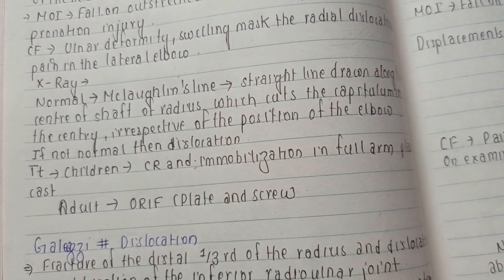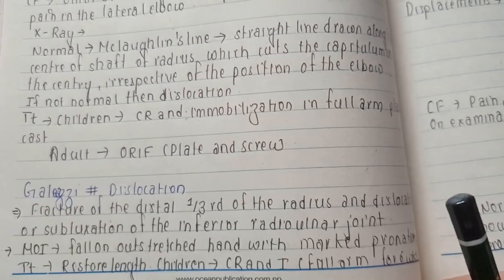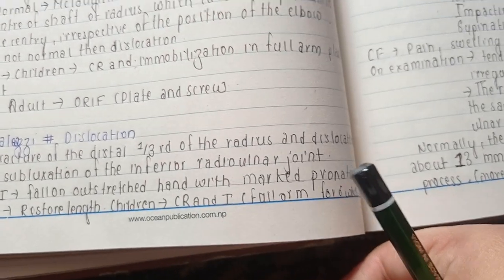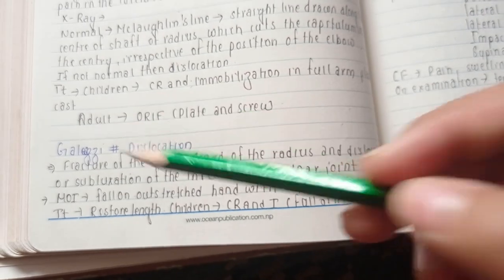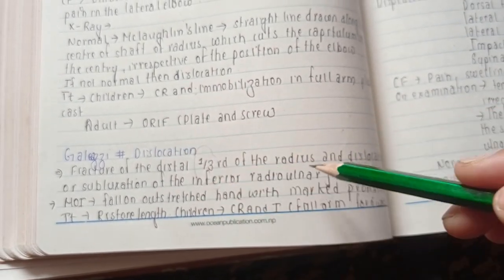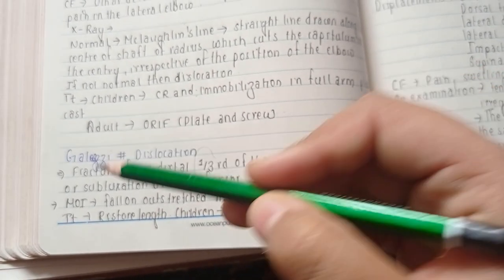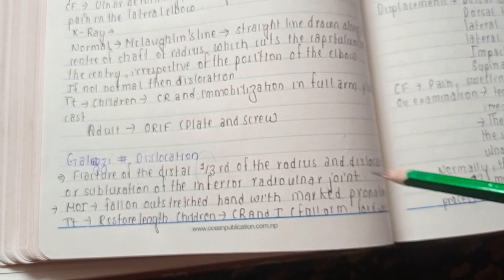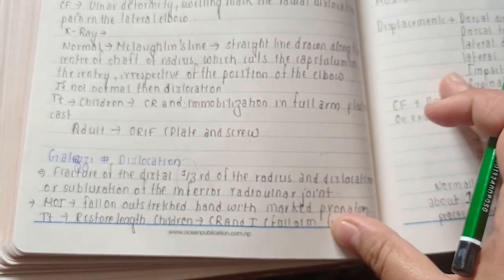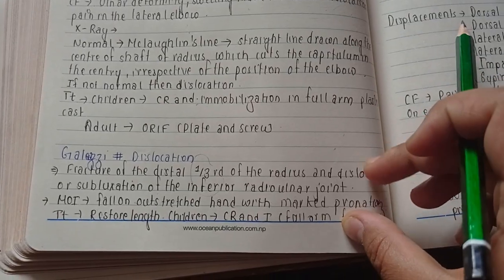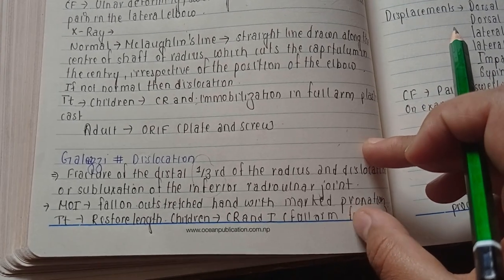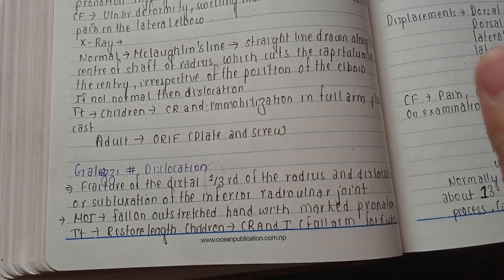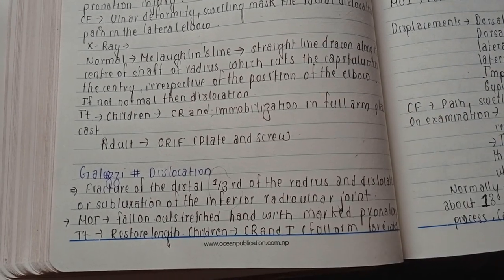Talking about Galeazzi fracture dislocation, I have already said that it is the fracture of the distal one-third of the radius and dislocation or subluxation of the inferior radioulnar joint. We know the difference between dislocation and subluxation: dislocation means total displacement of the two parts of the fracture, while subluxation is the partial dislocation.